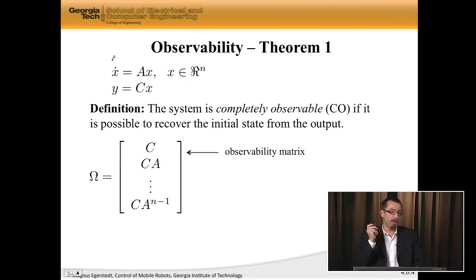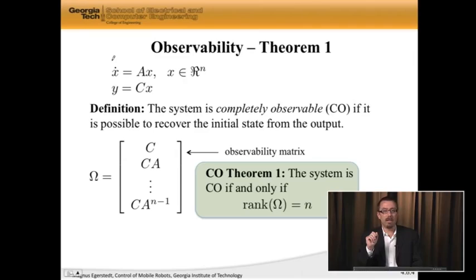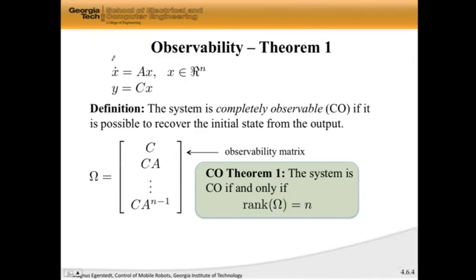And just like for controllability, we have a matrix. In this case, it's omega, which is the observability matrix. And theorem number one mirrors exactly theorem number one in the controllability case.